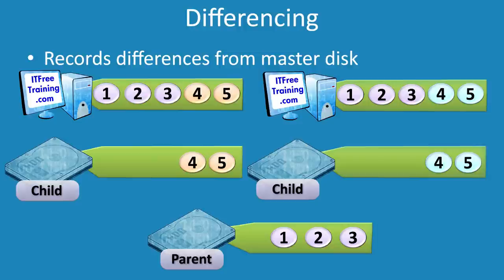You can see how using differencing can save a lot of space if you have a number of virtual machines accessing the same data, and also how it keeps track of changes. If you are planning to use differencing virtual hard disks, it is recommended that once the parent is created, you make it read only — any changes to the parent will affect all differencing virtual disks using that parent.